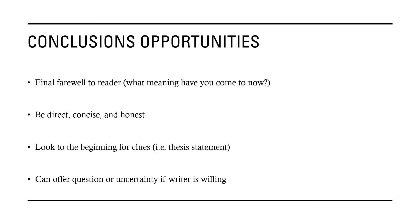Now let's look at conclusion opportunities — ways that we can improve how we move into our conclusions. If we are looking at story structure and thinking that our conclusion is act three, this is your final farewell, your goodbye to the reader. We should know what meaning have you come to now. We were there with you at your thesis, and we were there in the supporting body paragraphs. Where have you now arrived? A lot of times it takes one to two sentences to let us know: this is the point I have arrived at. This is my understanding. Also for conclusions — be direct, be concise, and be honest.